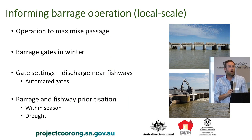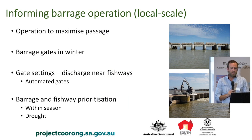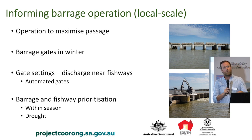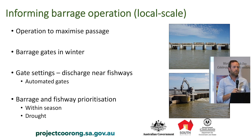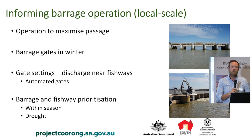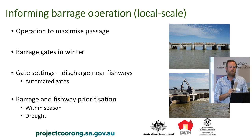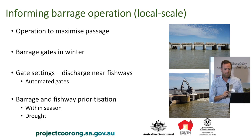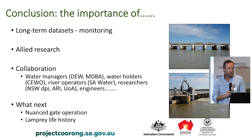There's been a range of changes at a local scale as well, largely owed to collaboration with river operators SA Water. These actions have really been to maximize passage at the local scale - things like making sure we discharge water from gates immediately adjacent to fishways so that fish are attracted towards the fishways rather than to positions on the barrage away from them. There's also been prioritization of different barrages for discharge at different times of year to aim for specific outcomes for different species, including a draft shutdown protocol should we enter drought conditions again, to ensure fish passage is provided as well as possible for as long as possible.